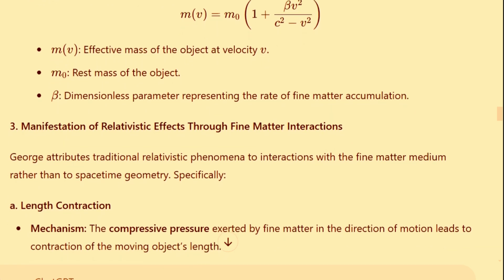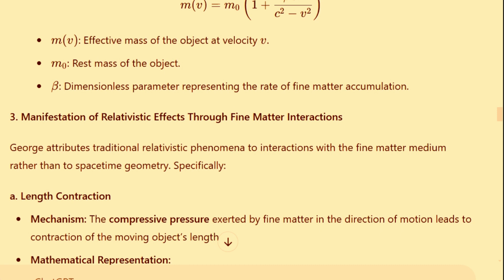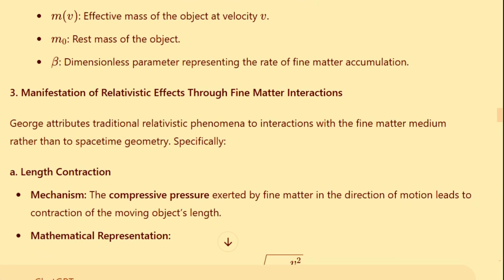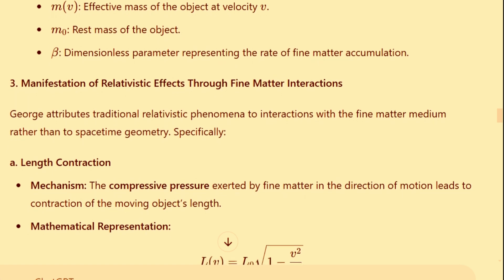In this equation, m of v represents the effective mass of the object at velocity v, m0 is the rest mass of the object, and beta is a dimensionless parameter representing the rate of fine matter accumulation.